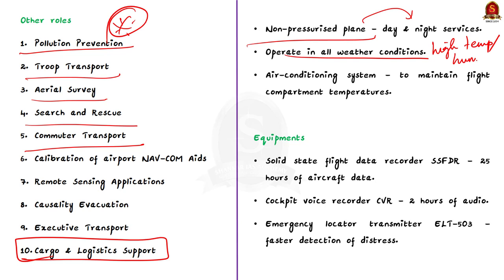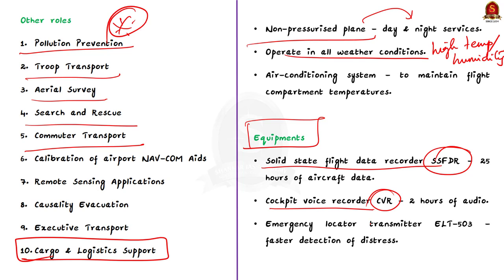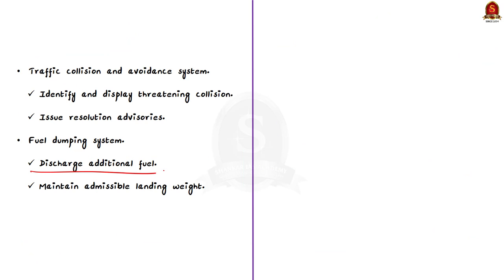The air conditioning system in the DO 228 is capable of maintaining flight compartment temperatures at comfortable levels. Some key equipment includes the solid-state flight data recorder (SSFDR) and cockpit voice recorder (CVR), which can record 25 hours of aircraft data and 2 hours of audio respectively. The emergency locator transmitter (ELT 503) enables faster detection of aircraft in distress compared to conventional systems. The Traffic Collision and Avoidance System identifies and displays intruding and threatening collision aircraft and issues resolution advisories. The fuel dumping system allows discharging additional fuel, helping the plane maintain admissible landing weight in an emergency.